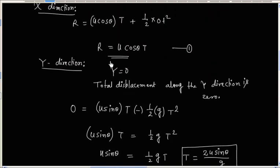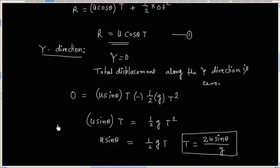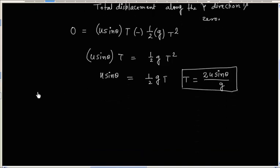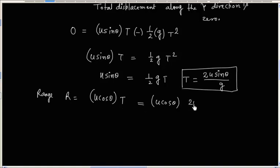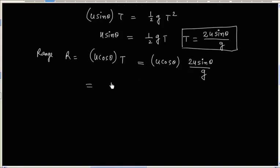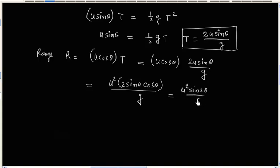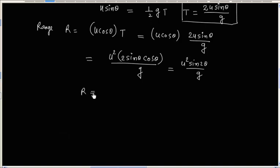Now, if we put this time of flight into equation 1, we can get the expression for range. This gives u squared times 2 sin theta cos theta by g, and using the identity 2 sin theta cos theta equals sin 2 theta, we have the expression for range: R is equal to u squared sin 2 theta by g.